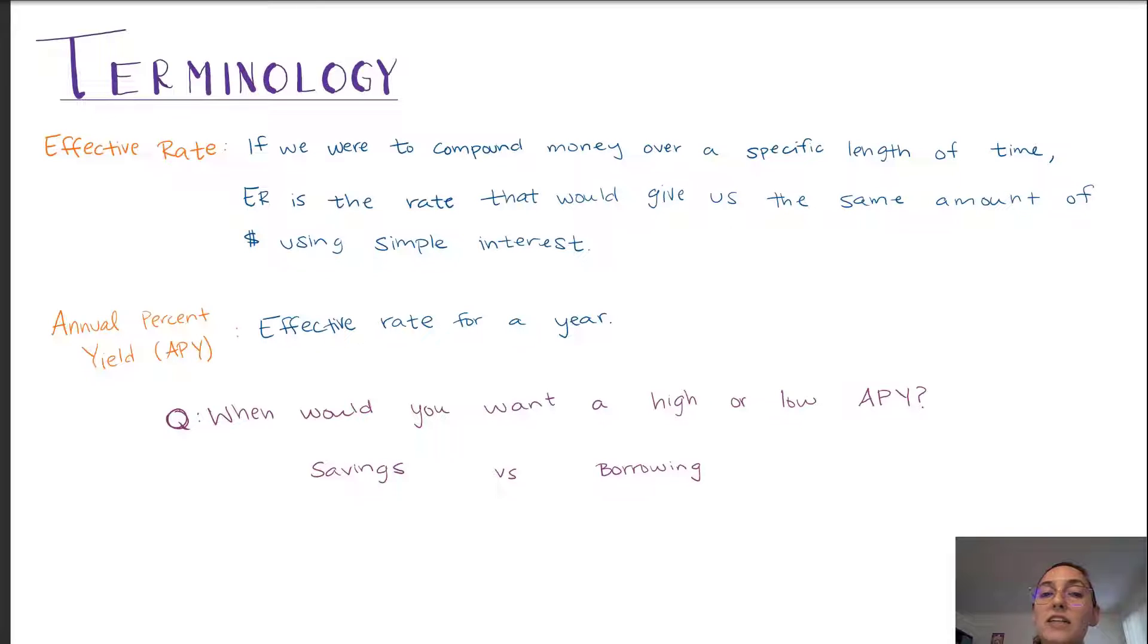Now when we find the effective rate for one year, that is what is called the APY or the annual percent yield. So some food for thought. When would we want a high APY and when would we want a low APY?